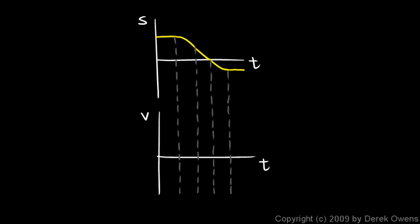Our next one looks like this — here's a graph of s versus t, position versus time, and we need to make a graph of the derivative of position, which is the velocity. This is in five sections: the first where it's flat, the second where it's curving down, the third where it's straight at an angle, then where it's curving back, and then where it's flat again at the end. Let's do the easy ones first. In those two flat regions, the slope is clearly zero, so I'll just graph zero for those two regions.